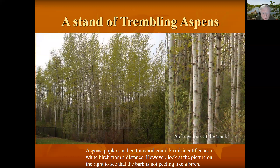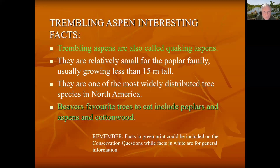Here is a stand of trembling aspens. Trembling aspens are also called quaking aspens, and beavers' favorite trees to eat include poplars, aspens, and cottonwood. Remember, facts in green print could be included in the conservation questions.